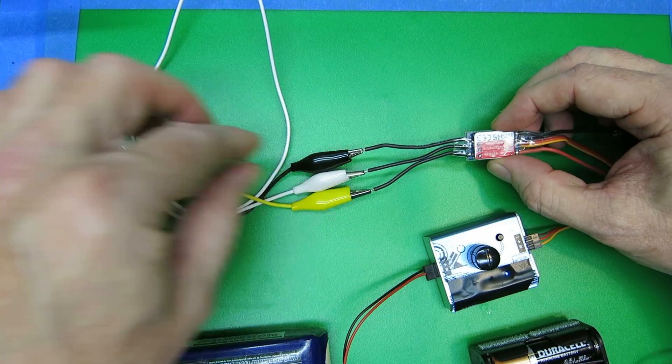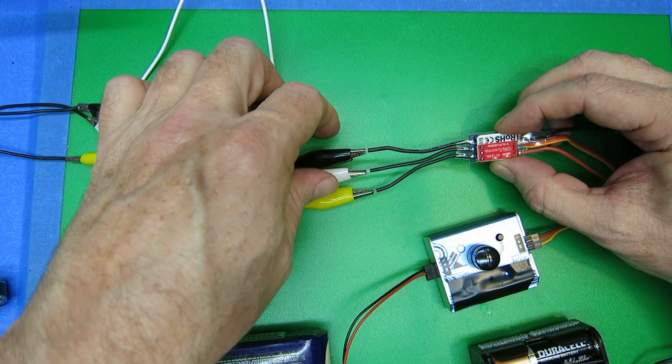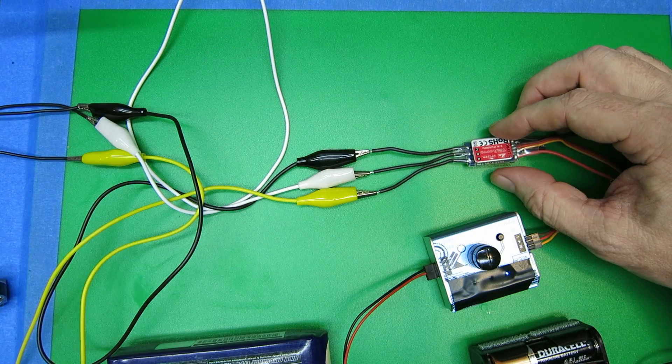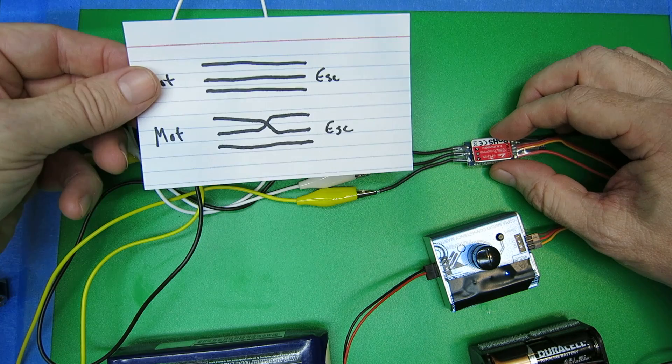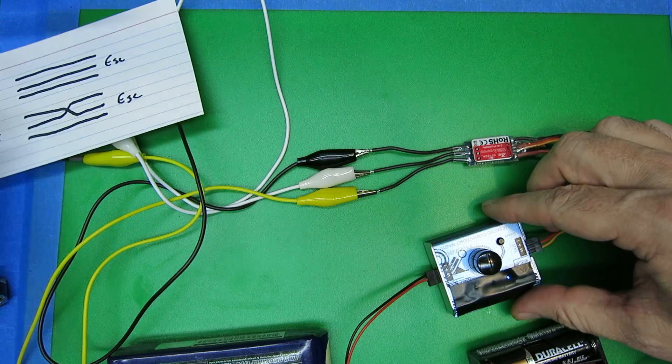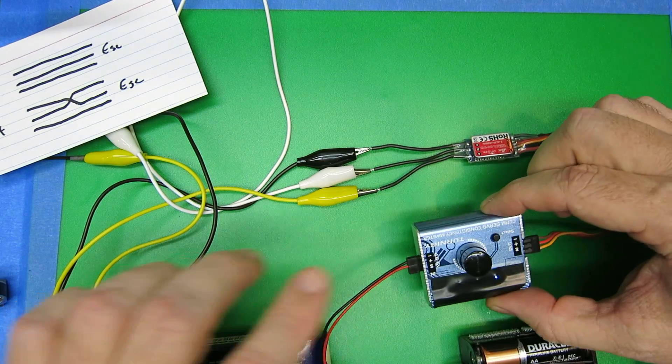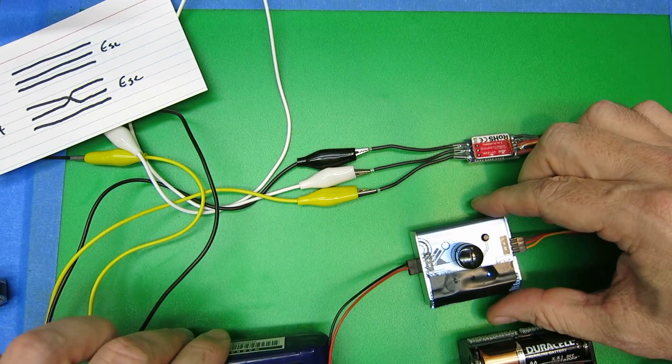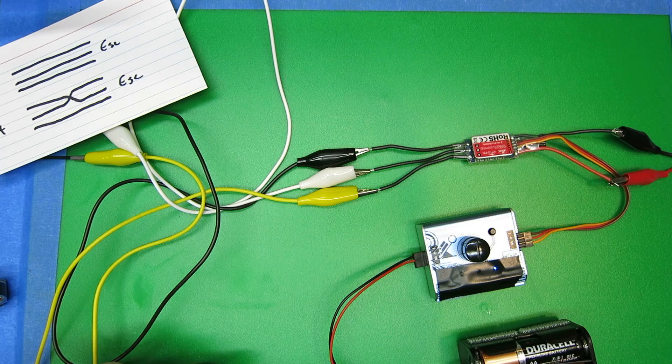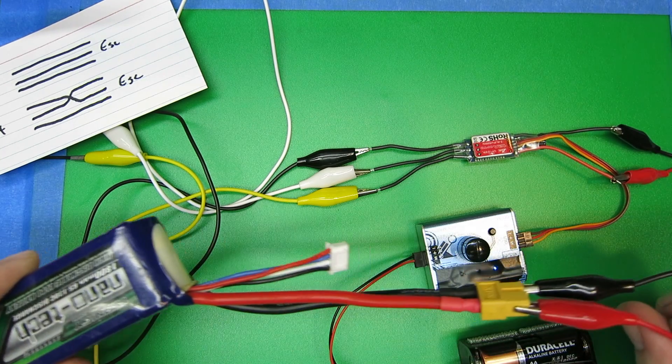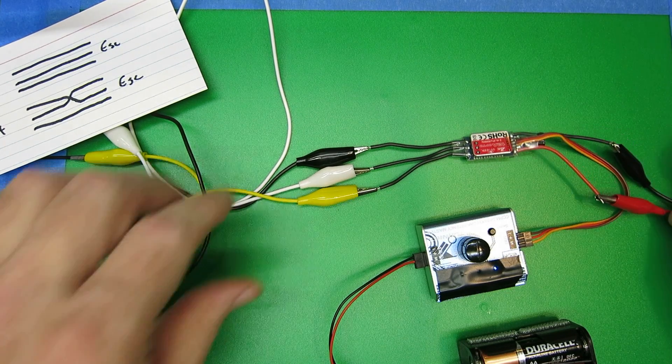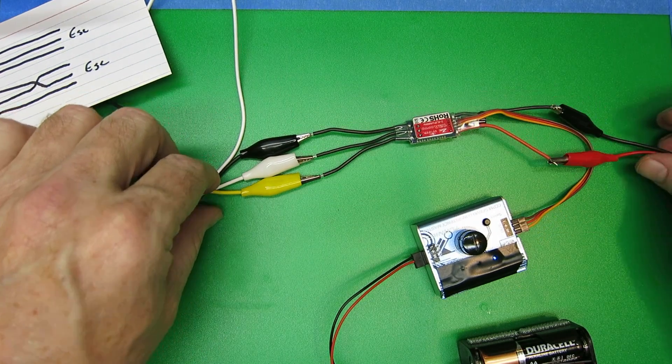And over on the ESC, I've got this hooked up black, white, yellow. So this is basically the wires running without any cross in there. I've got it hooked up to a servo tester and I've got a battery hooked up to the power leads of the ESC.